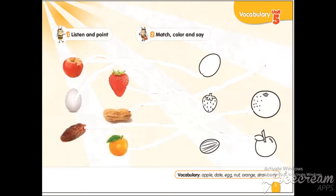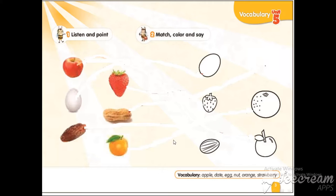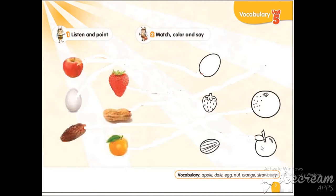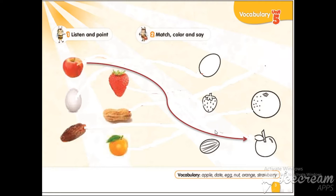They are going to match the picture on the left with the picture on the right. Can you find the apple? Where is the apple? Apple. Yes, apple. And here, can you find the apple? It is an apple. Now draw the line from this apple to this apple.